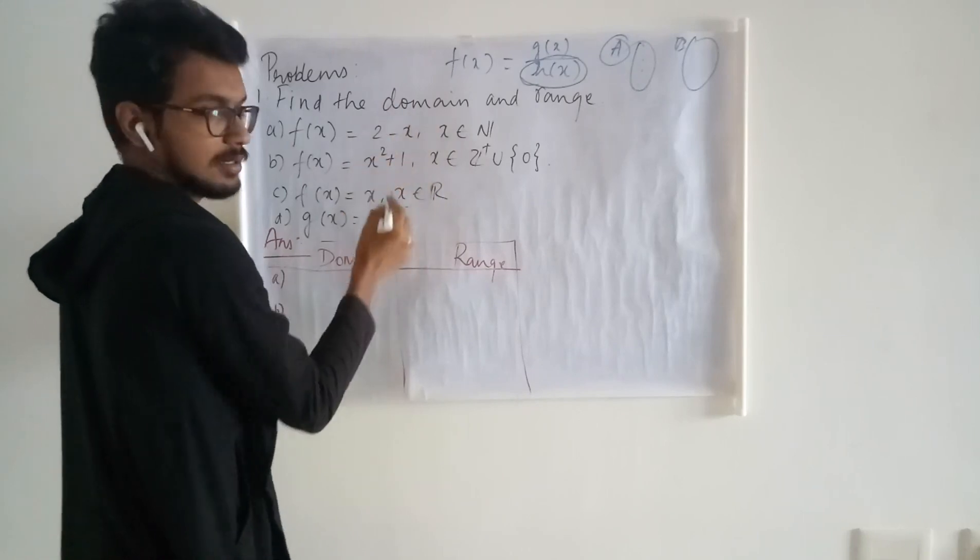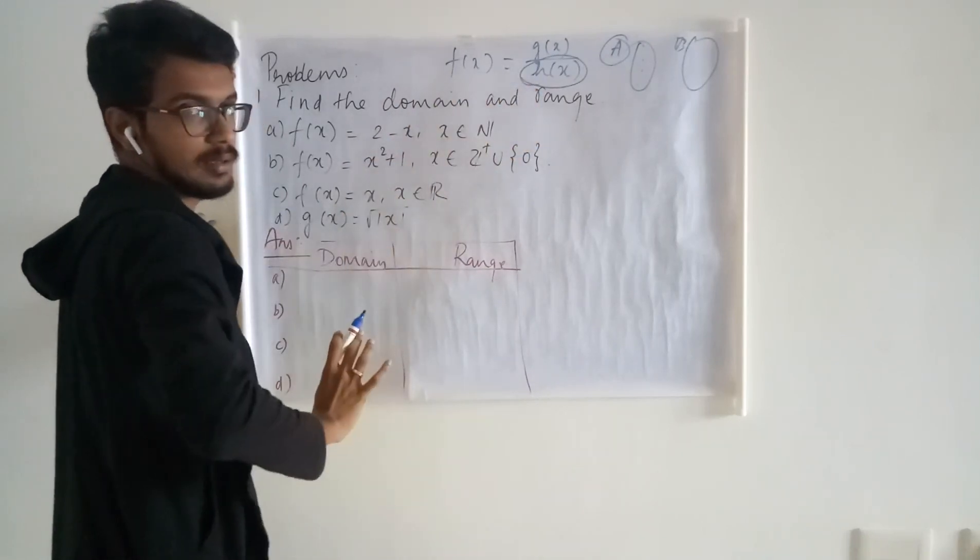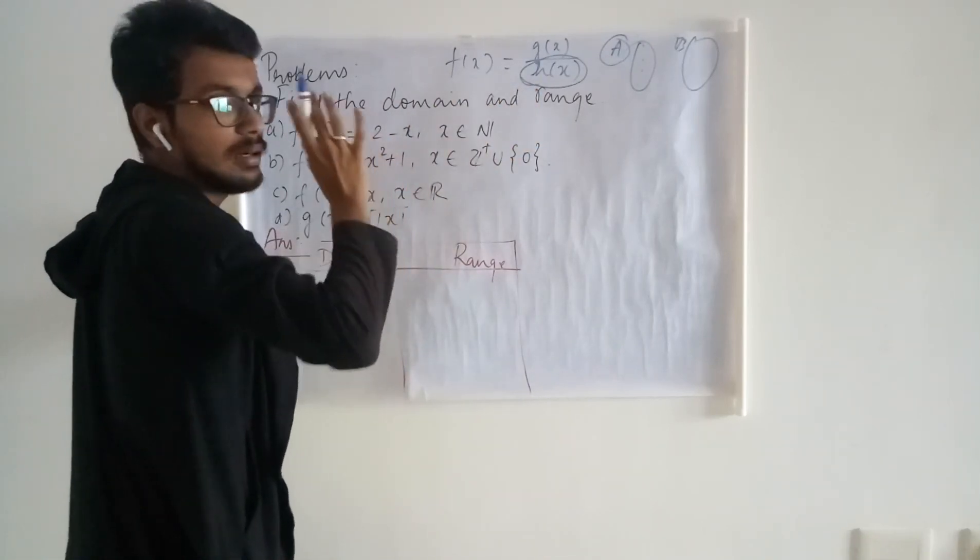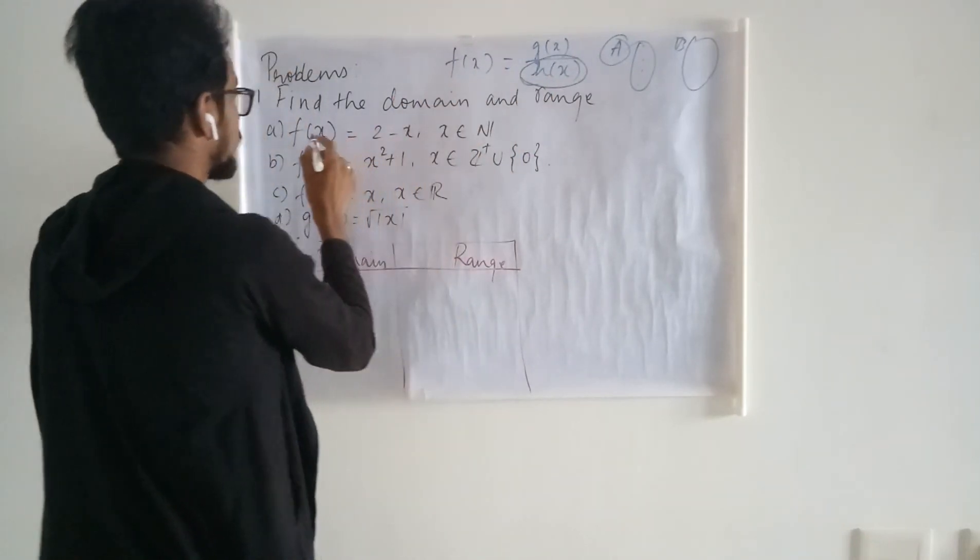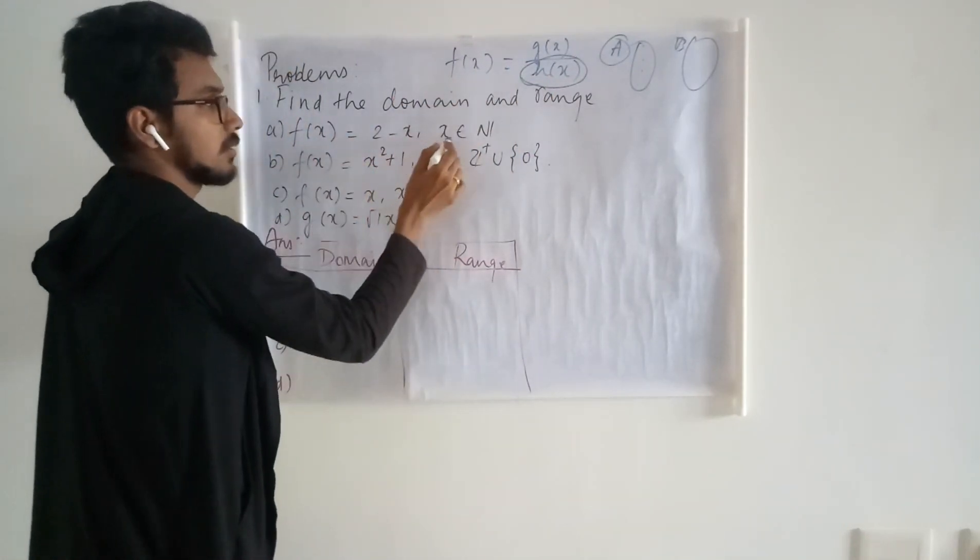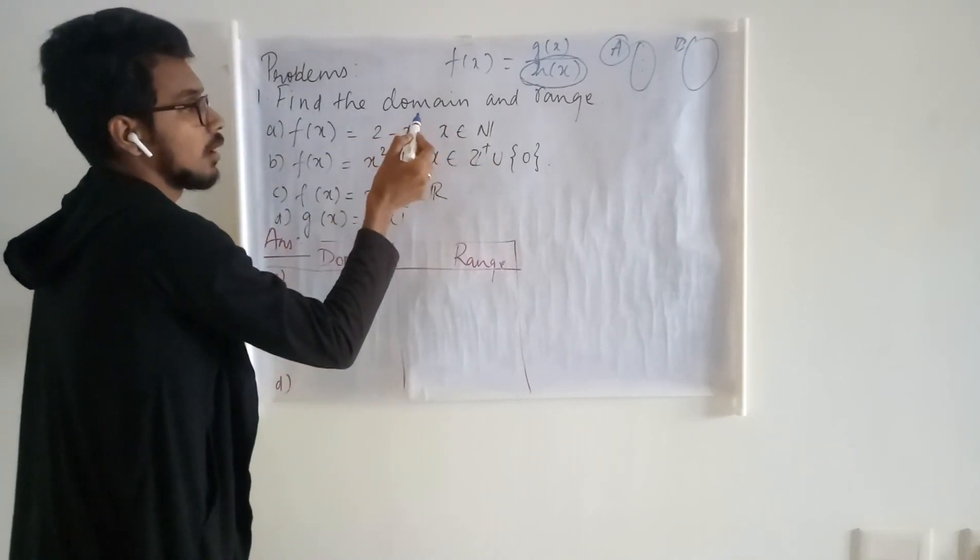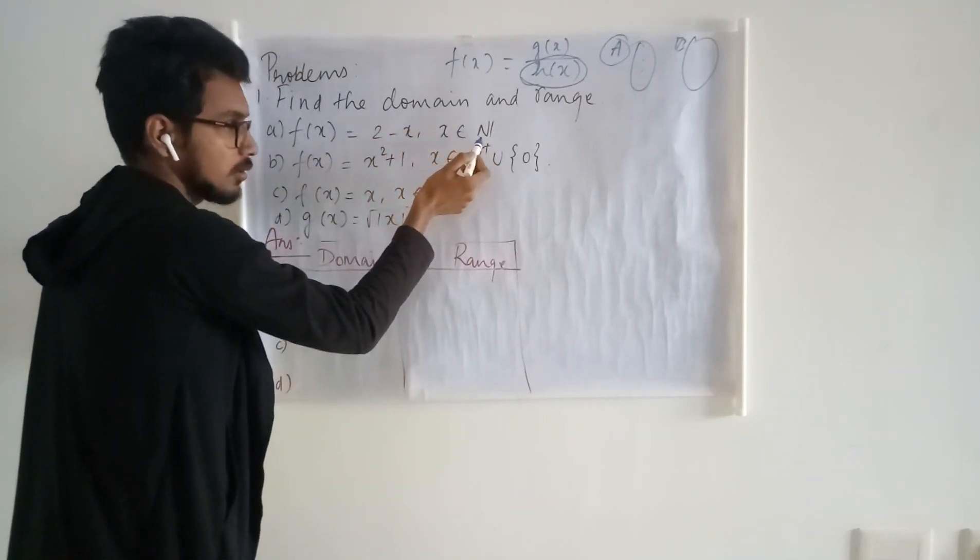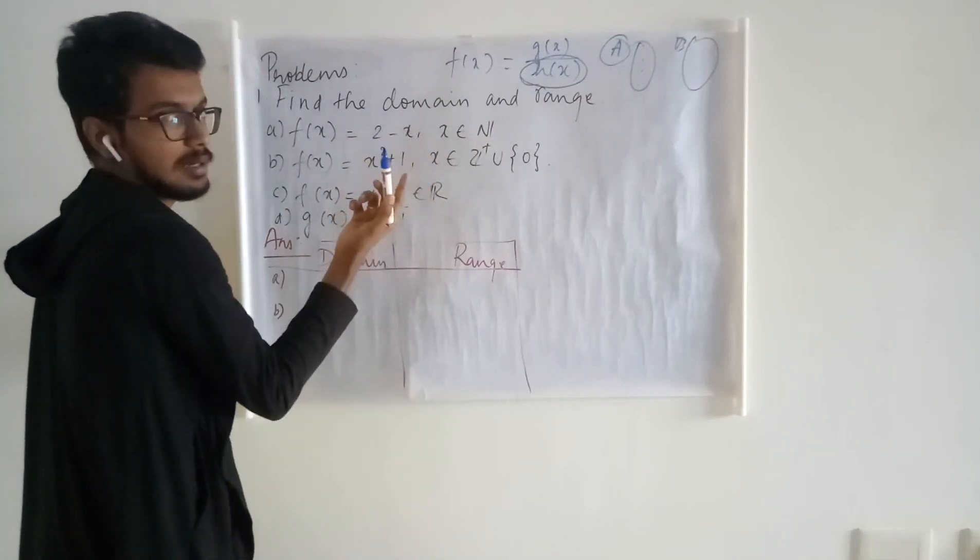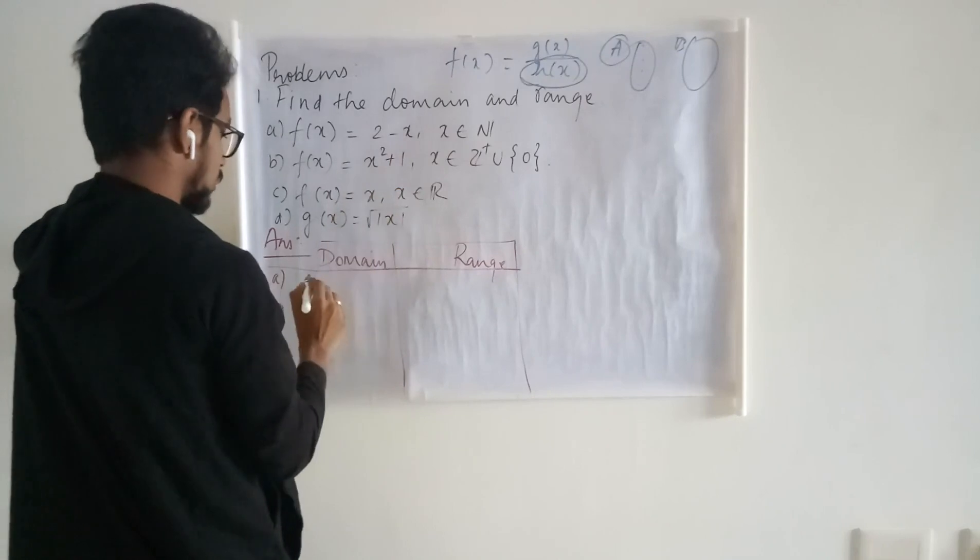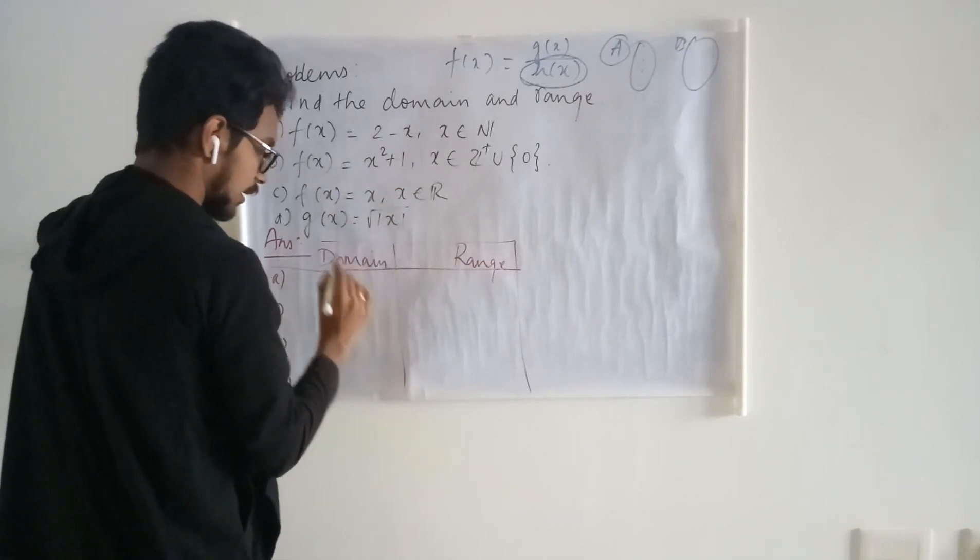Here, all those functions are not of that kind, so it is not a bother here. In the first function, it is given that x takes values in N, which means all the values of N can be substituted here and at no point does the function not exist. So the domain is the entire N.